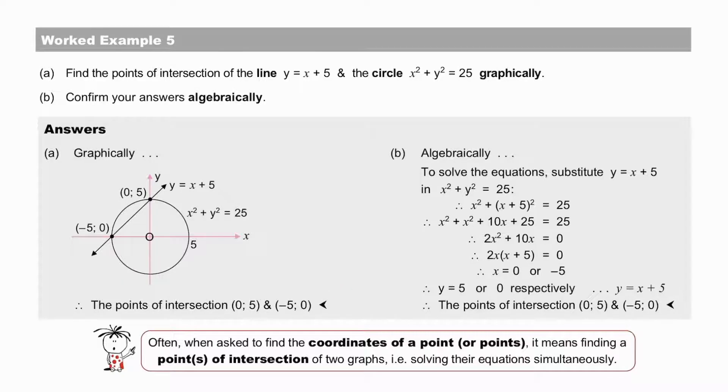In B, we do so algebraically by solving the equations. The answers ought to be, and are, the same of course. Often, when asked to find the coordinates of a point, or points, it means finding the point, or points of intersection of two graphs, i.e. solving their equations simultaneously.